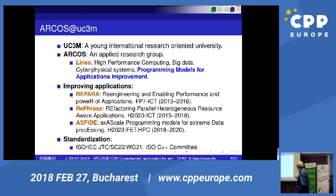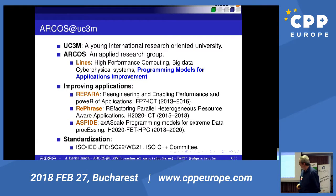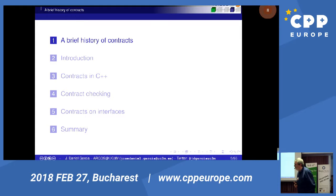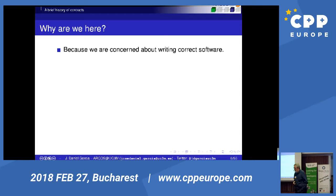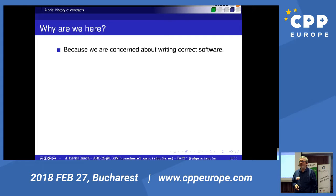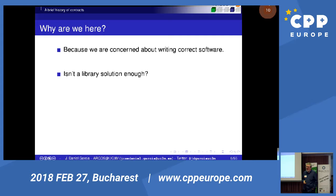I am in a research group where my main topic is performance models for application improvements, and we have had a number of projects funded by the European Commission. Let's talk about contracts. Why did we start talking about contracts? Because we are concerned about writing correct software. If software doesn't need to be correct, it can be arbitrarily fast — the problem is that first it needs to be correct.